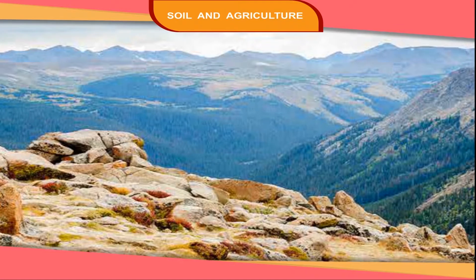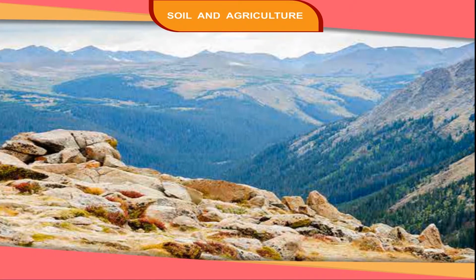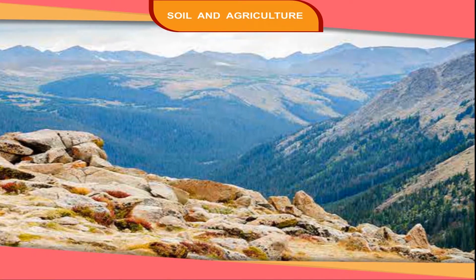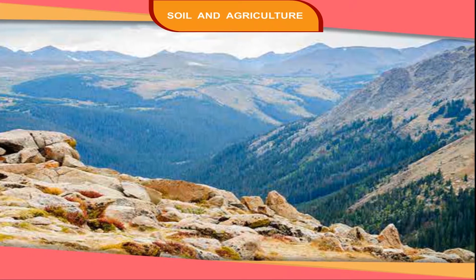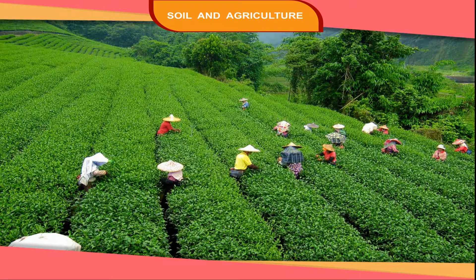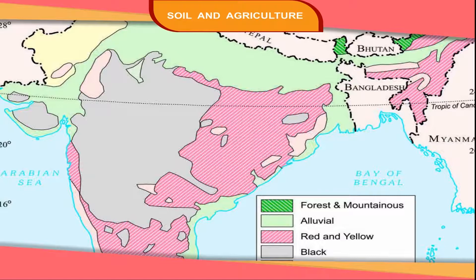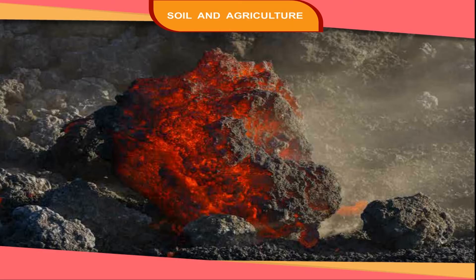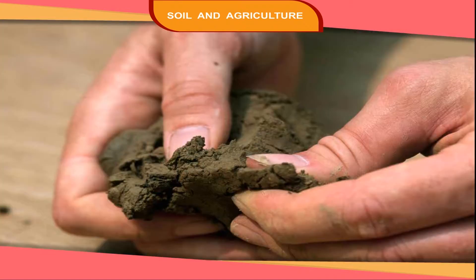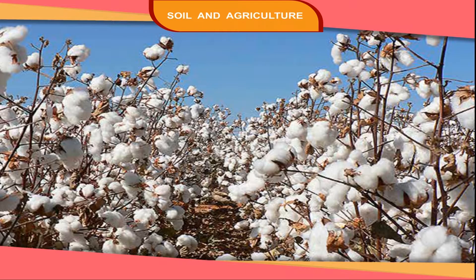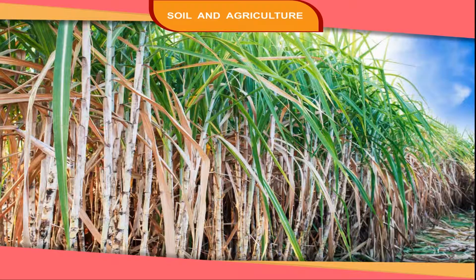Mountain soil is rocky in nature and is found in the Himalayan region. It is suitable for tea. Black soil is found in the north-western parts of the southern plateau. It is made from the decomposition of volcanic lava deposits. Black soil is sticky, can hold water, and is good for growing cotton and sugarcane.